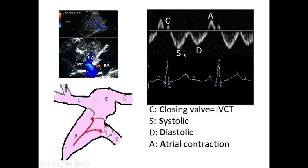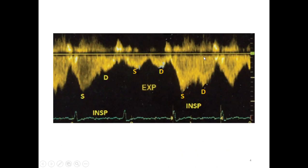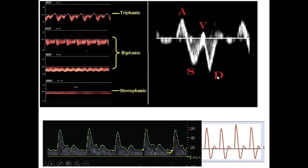Another component is the S wave, which corresponds to the systolic phase of the right ventricle. Whenever there is right ventricular dysfunction or right-sided congestive heart failure for any reason, the S wave decreases. As seen here, the S wave becomes smaller than the D wave and the A wave is more prominent, indicating right ventricular dysfunction.